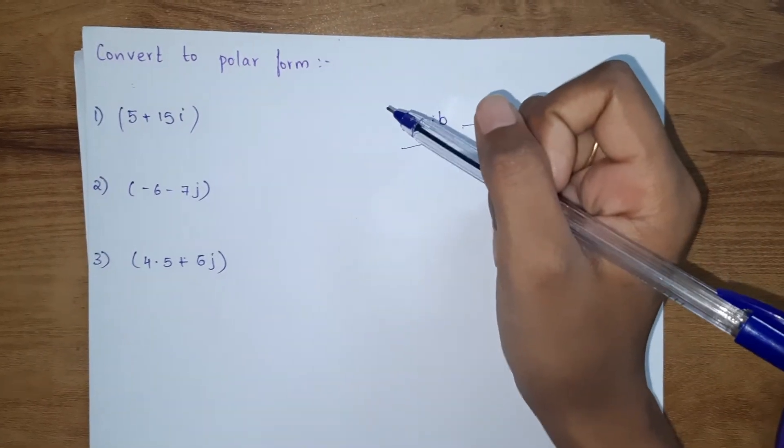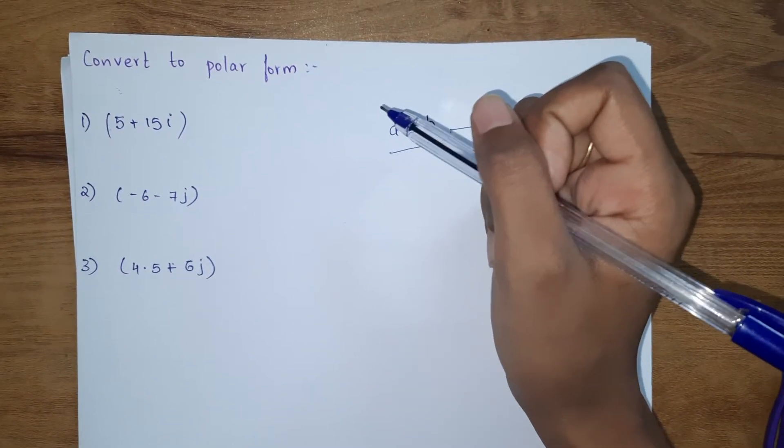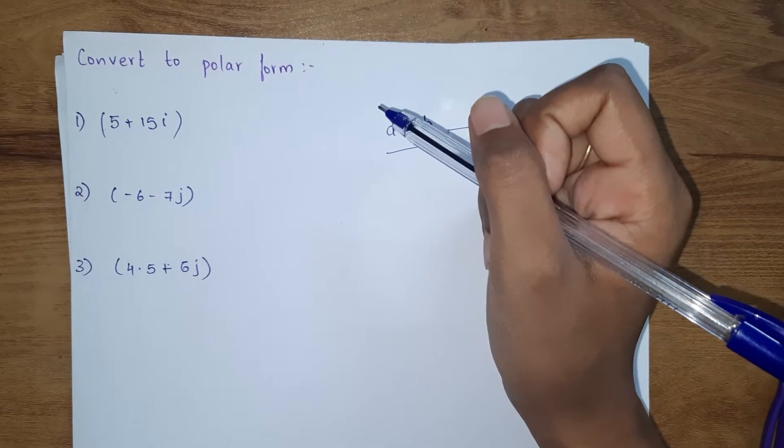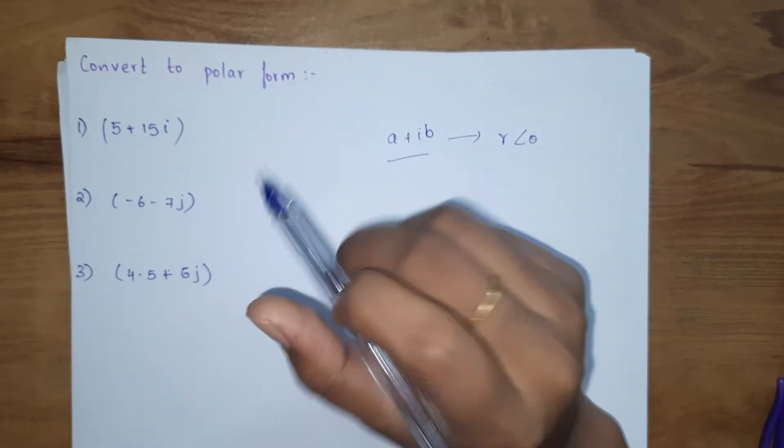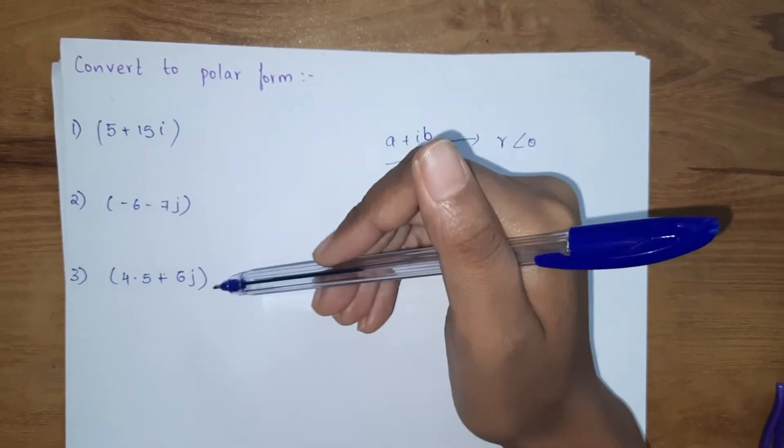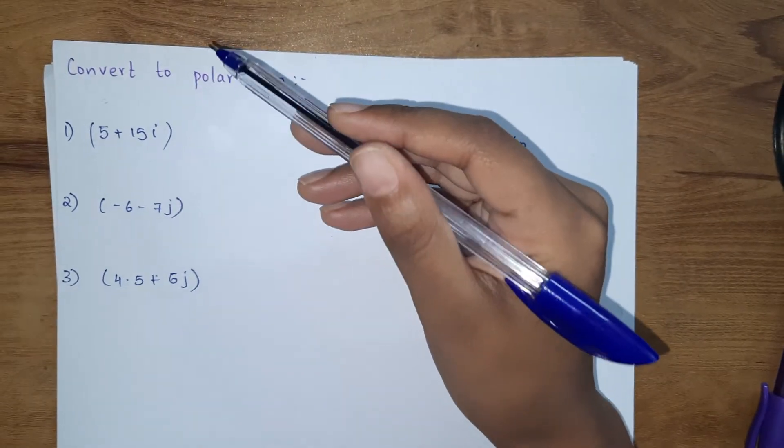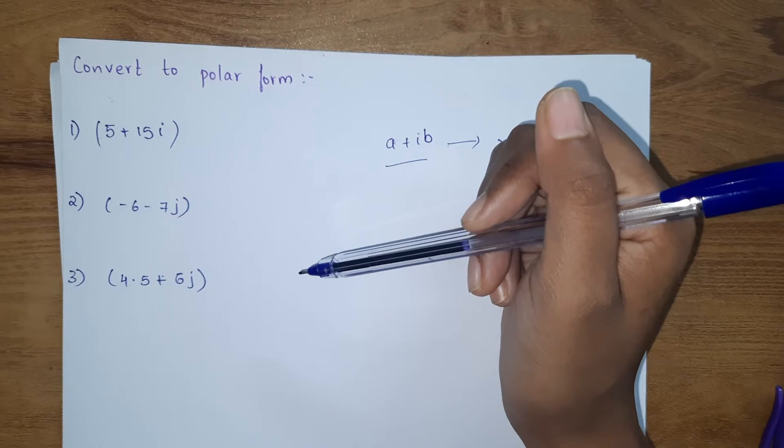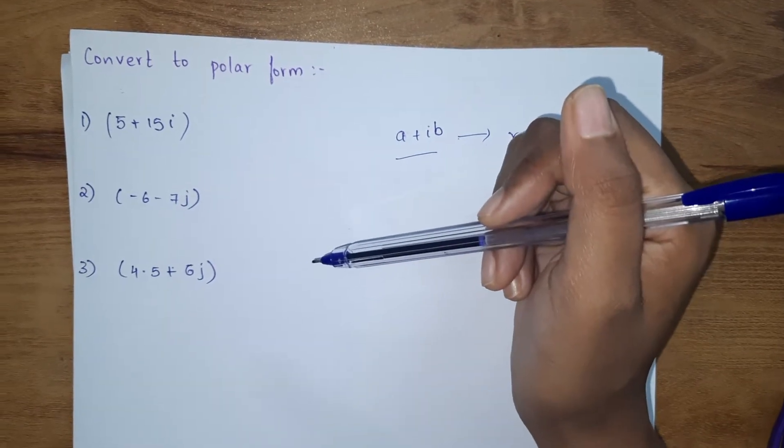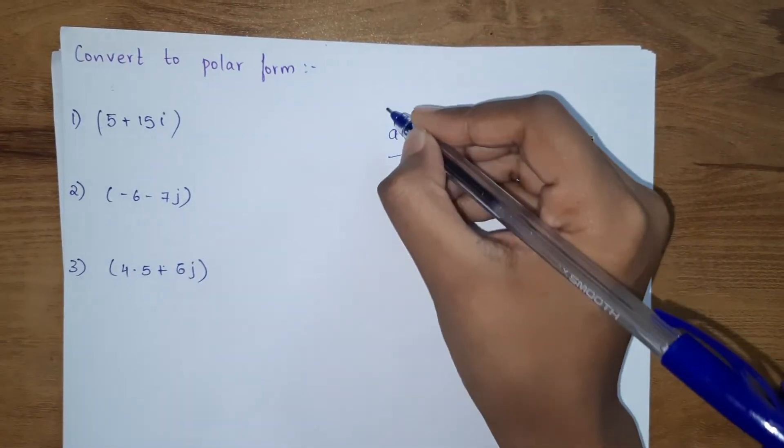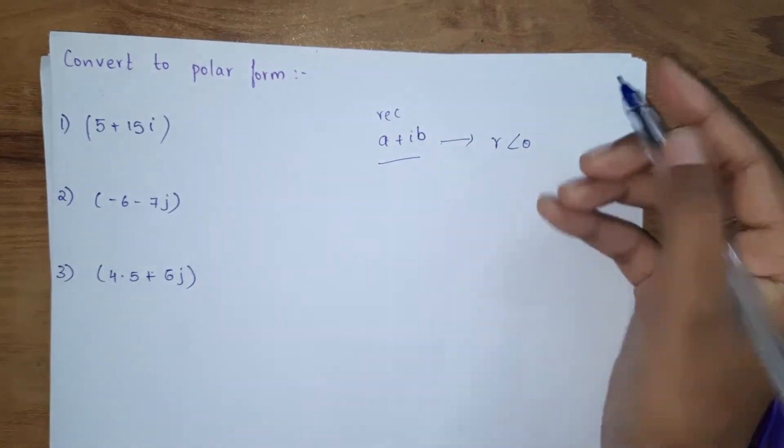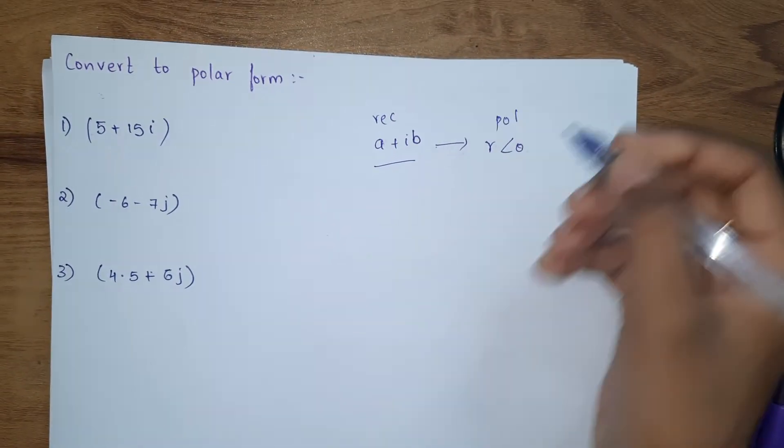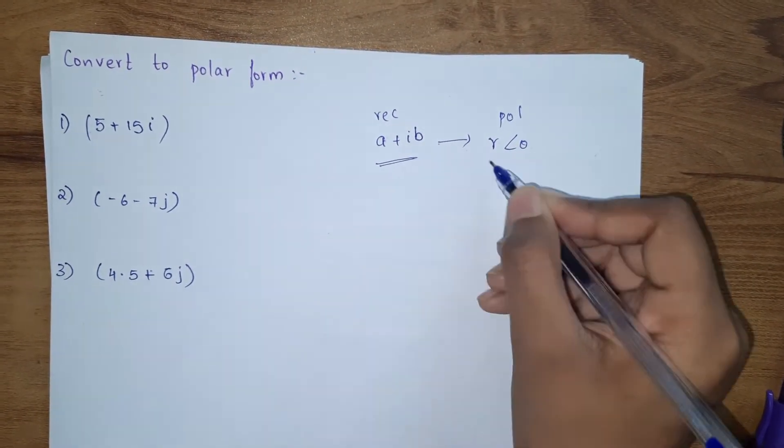Hello guys, welcome back to my channel Nerdy Nerdy. I'm back with another video on conversion to polar form. Given our question is in rectangular form, we are going to convert it into polar form. In the previous video we saw polar to rectangular conversion. This is rectangular form and this is polar form, so we are going to convert rectangular to polar form.